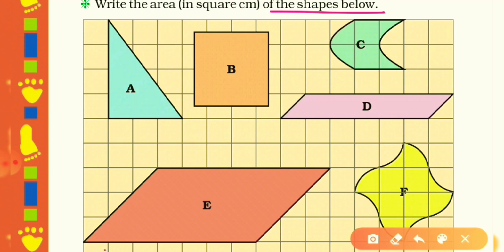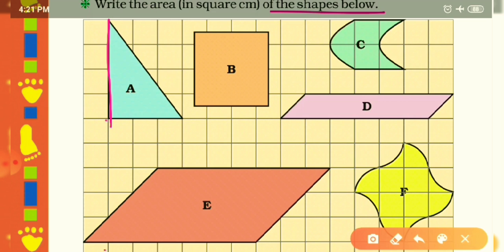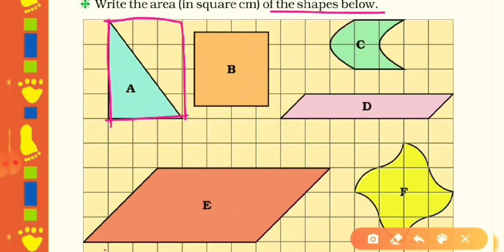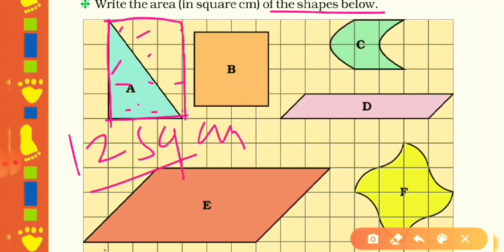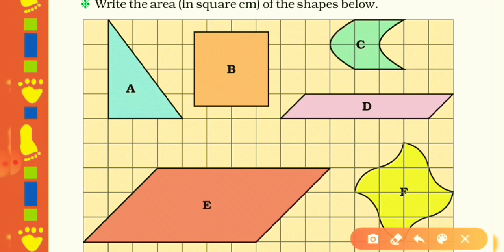Now: 'Write the area in square centimeters of the shapes below.' We have six figures. For shape A, we find the area of the pink rectangle first, because the triangle is half of it. Count the squares: 1, 2, 3, 4, 5, 6, 7, 8, 9, 10, 11, 12 — the rectangle's area is 12 square centimeters, so half is 6 square centimeters. The area of shape A is 6 square centimeters.